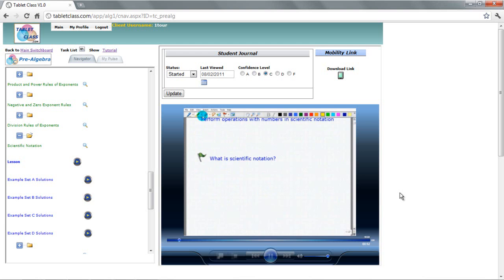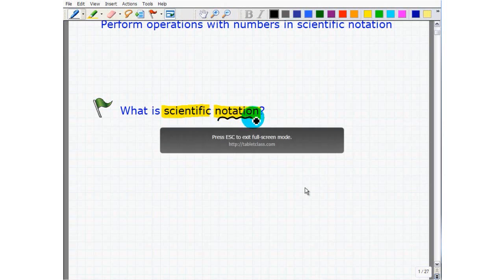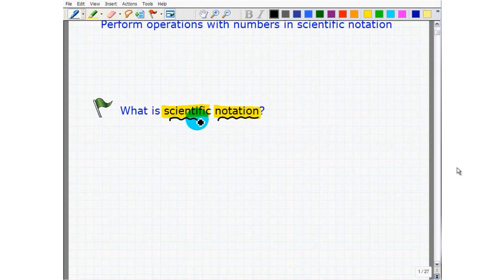Well, if you look at the root words here, scientific and notation, notation kind of indicates some sort of language or words, if you will. And then, of course, scientific means science. So we're talking about the language of science.